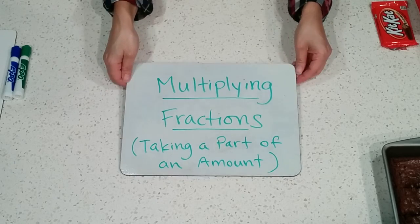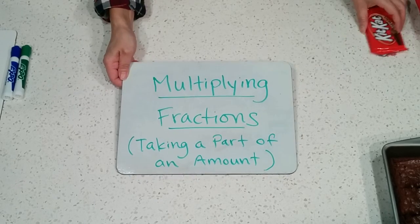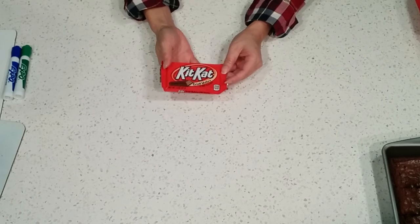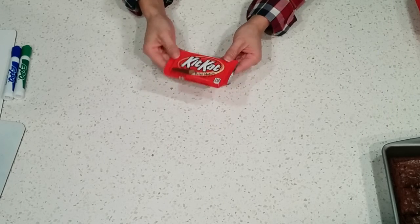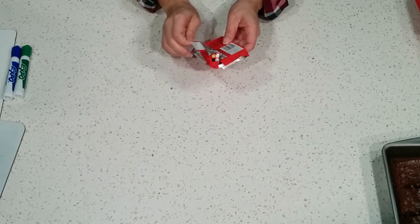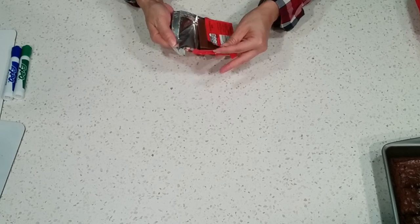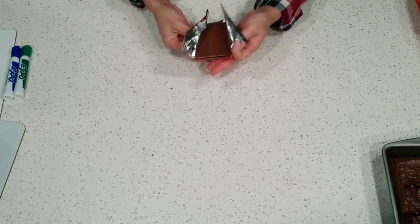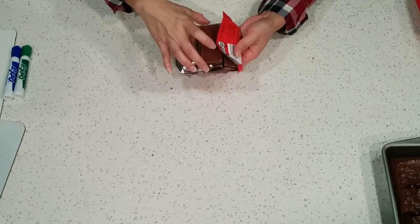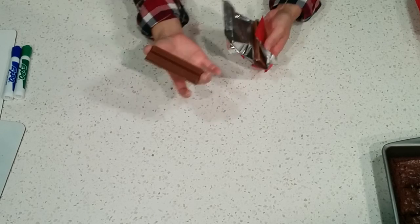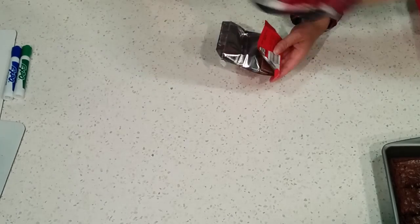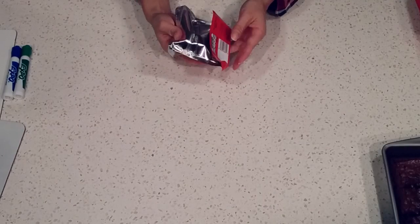I'm going to start off with a KitKat. I have this KitKat here, and I'm going to go ahead and share it. I'm going to give half to Lily. So I'll break my KitKat — and there's half. Lily gets half of this KitKat. She takes that and it's gone. Now I have another half left.